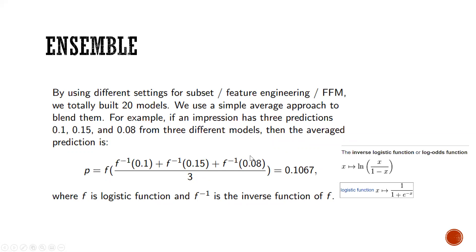For ensembling the 20 models, instead of a straightforward average, they use a logistic-form averaging method: first apply the inverse logistic function (which maps values between 0 and 1 to negative to positive infinity), take the average, then apply the logistic function to convert back to a probability. This approach is more suited to log loss evaluation because it operates in log space, better fitting the way the metric is computed.